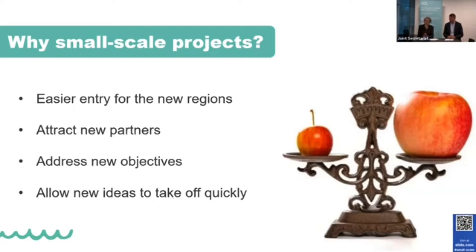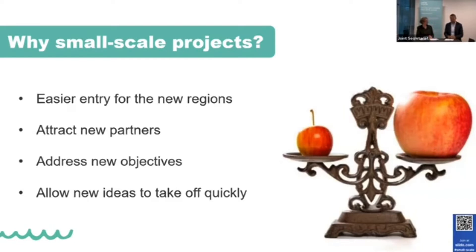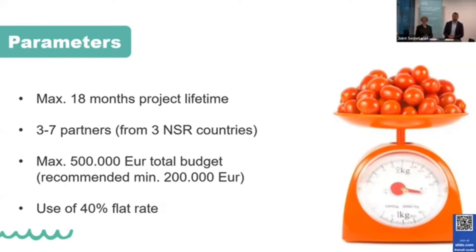Those are the main reasons the Interreg North Sea program decided to start up the small-scale scheme. The main parameters are as follows: small-scale projects can last up to 18 months. At least three, maximum seven partners would be in a partnership, but from at least three North Sea region countries — that's very important to keep the transnational angle of these smaller projects.